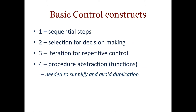In control structures, we have sequential, selection, and iteration. And then we have procedural abstraction, which is defining functions. Your first class should have emphasized that when you write programming, you want to avoid duplicating — avoid doing the same code in two or three different places in your program.